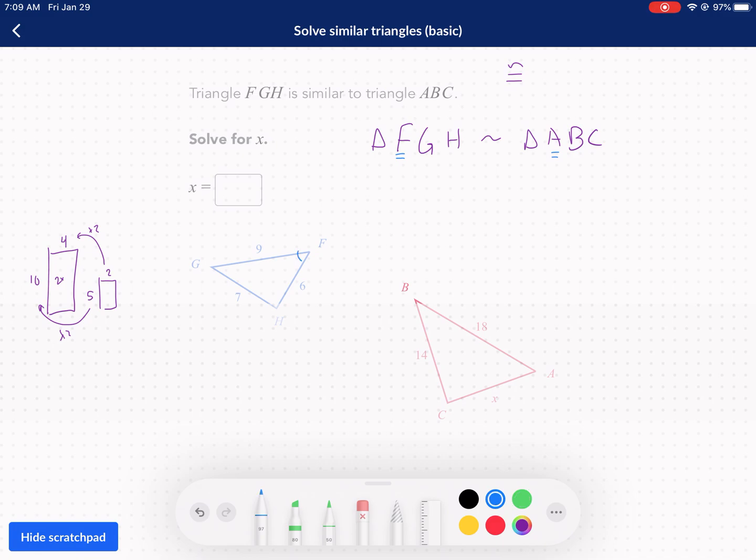So it says FGH is similar to ABC. That means F angle F is the same as angle A. I'm gonna go ahead and label that, F is the same angle as A. Then we have G is the same angle as B because it's listed in the same order. It has to be, otherwise it's messing up. It has to list it in the same order.